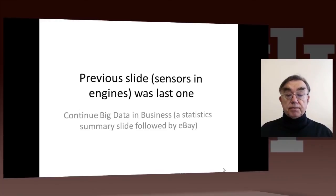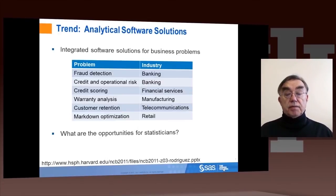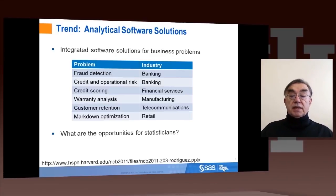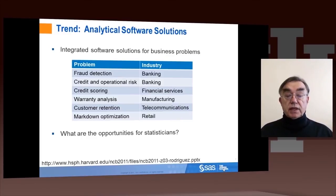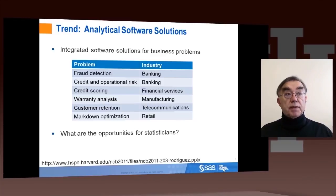So now we continue with big data in business. The first slide is one from a speaker at SAS, which points out the opportunities for statisticians in building integrated software solutions for business problems. They identify various applications: fraud detection, credit risk, credit scoring, analysis of warranty data, customer retention — that's analyzing what causes people to leave or not leave their phone subscription — and the important area of optimizing pricing in the retail business.